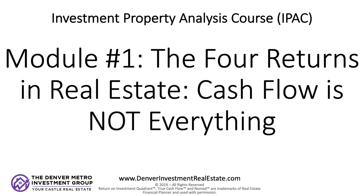I've got one more example property to go through. This is a nomad property purchased in 2019 in Arvada. A nomad property is where the owner buys a property as their primary residence, lives there for a year, then converts it to a rental property. It's a powerful and simple way to acquire rental properties for two main reasons: a very low down payment — 3.5% for FHA or 5% down conventional — and a lower interest rate, typically a half to one point lower on a primary residence.